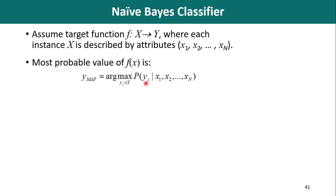We want to pick the output with the maximum probability. So we compute the probability for every class label yj, where yj belongs to capital Y — the set of all labels or classes. We find the probability of each class yj given the set of input data, and we pick the output with maximum probability. Whichever yj value gives us the highest probability, we assign that class as our predicted class.